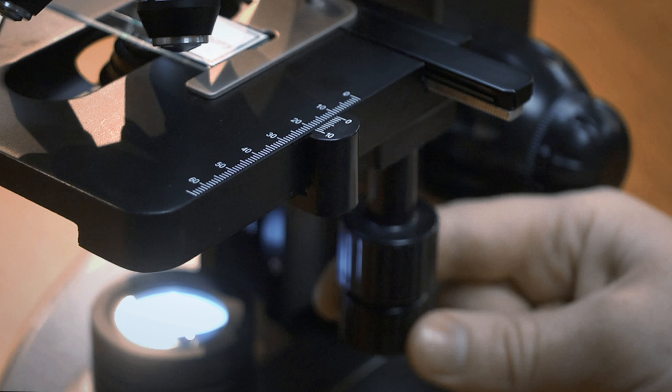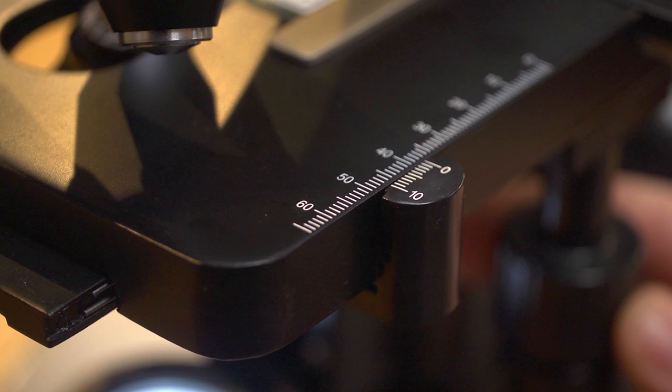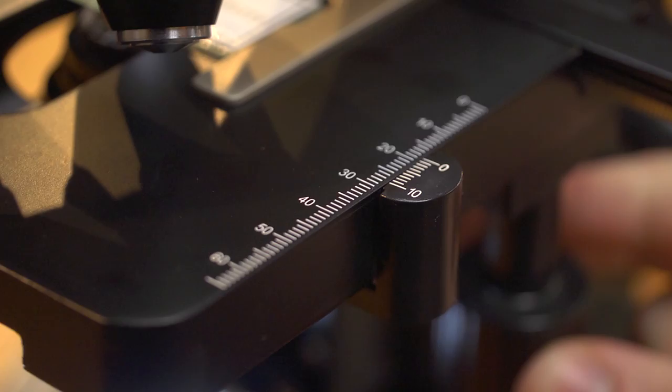This microscope comes equipped with a mechanical stage that allows you to easily navigate through your slide. The knobs are stacked to the right of the stage and add a ton of precision and control. We've also added linear scales on the sides to help you measure how far your slide is actually moved.